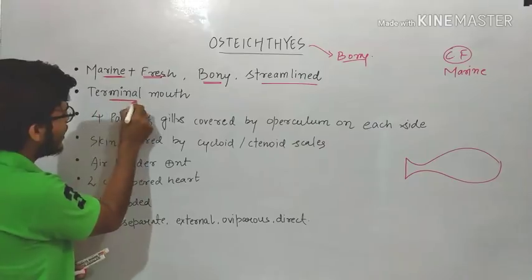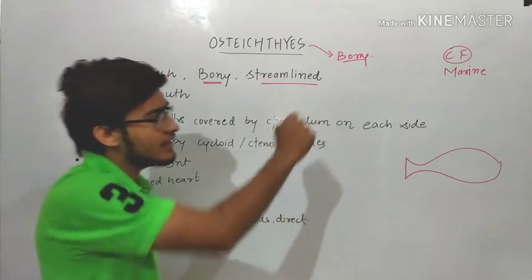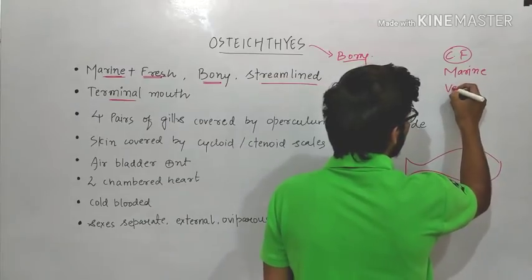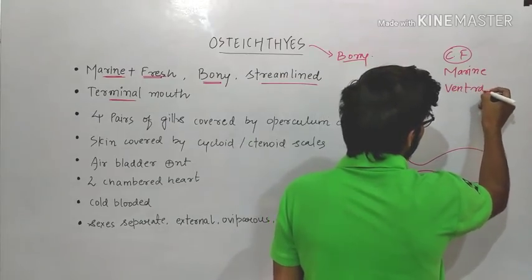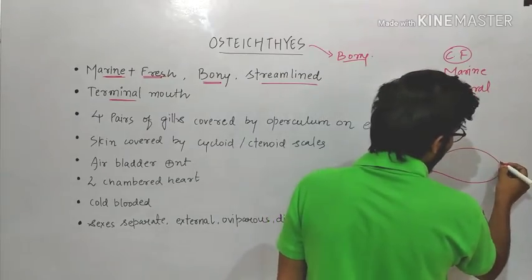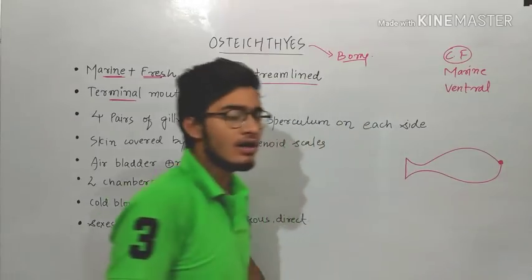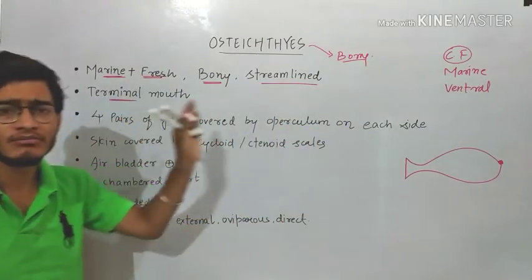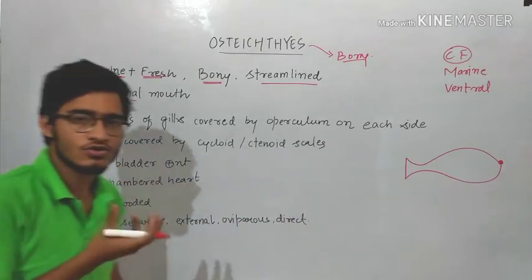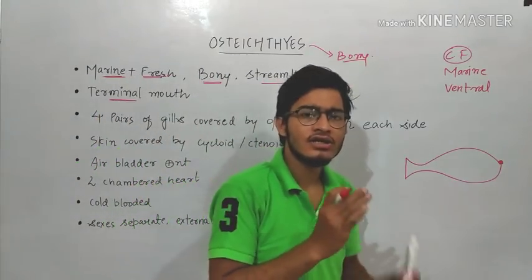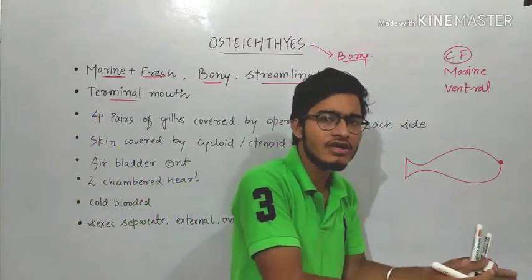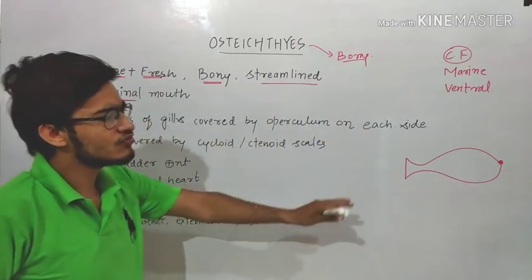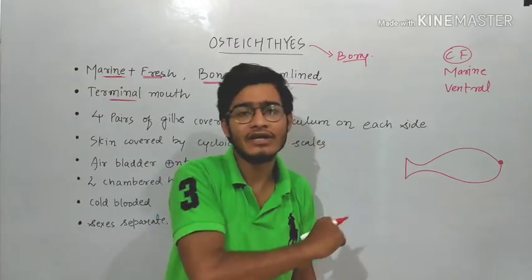After that, the mouth is terminal in bony fishes. In case of cartilaginous fishes the mouth is present on the ventral side. So in case of cartilaginous fishes the mouth will be present in the ventral position, but in case of bony fishes the mouth will be present on the terminal end. This is a major difference.